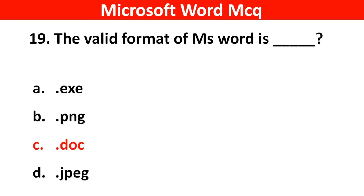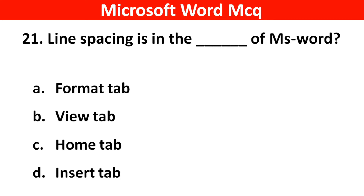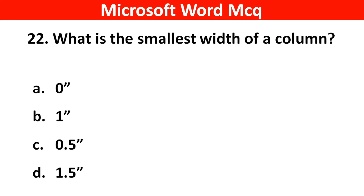Next question: What program is used in MS Word to check the spelling? Right answer is Option D: Spelling and Grammar. Next question: Line spacing is in the dash dash of MS Word. Right answer is Option C: Home tab. Next question: What is the smallest width of a column? Right answer is Option C: 0.5 inch.